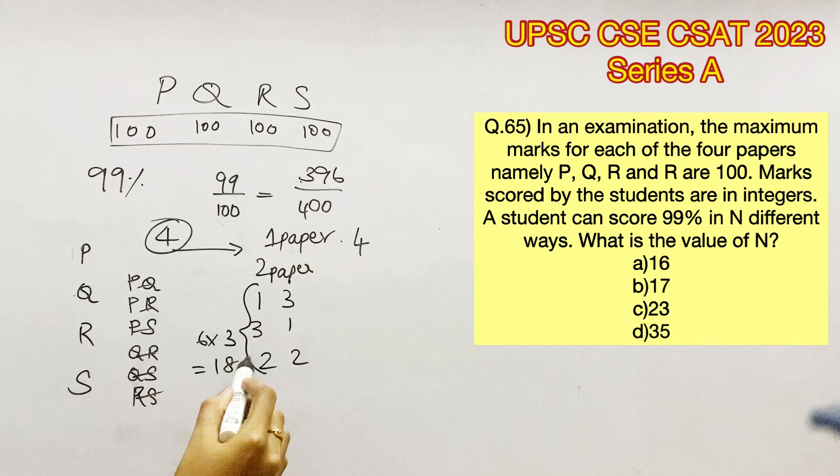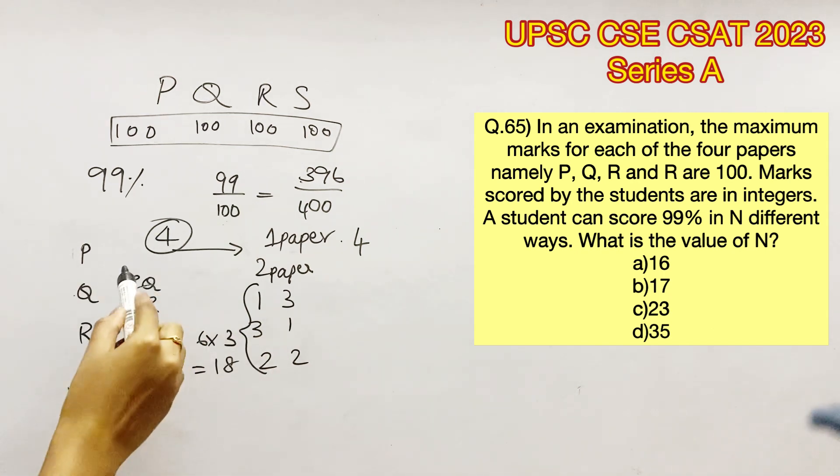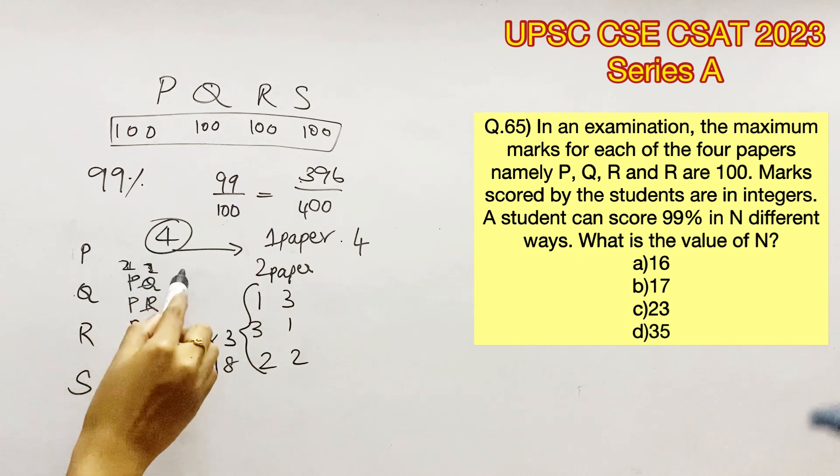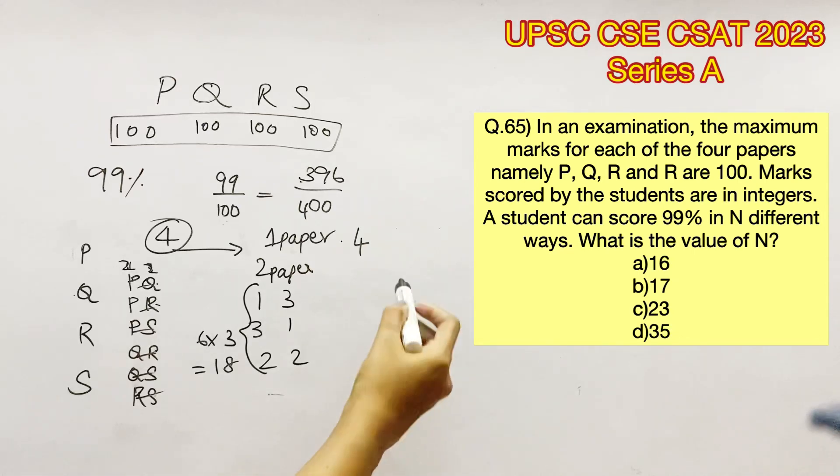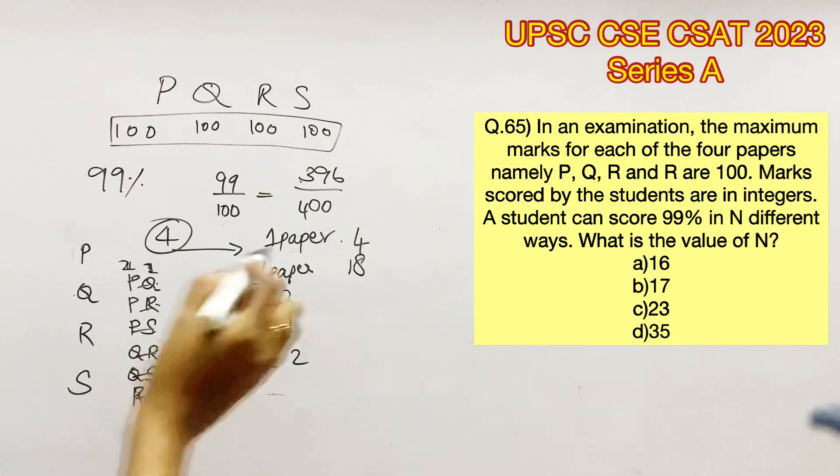The logic here is simple. Why we are multiplying six and three is because let's consider the first pair. The first pair alone can lose marks in three different ways. The first case where P has lost one mark and Q has lost three marks. Second case where P has lost three marks and Q has lost one mark. And the third case where P and Q have lost two marks each. Therefore, every single pair will have three such ways. This is the reason why we are multiplying six into three. So there are 18 ways for two papers.